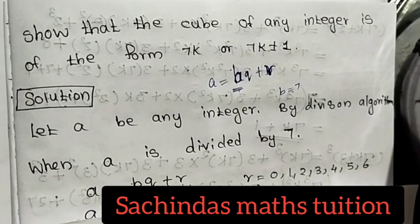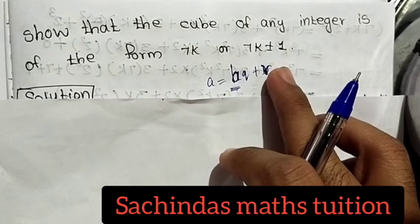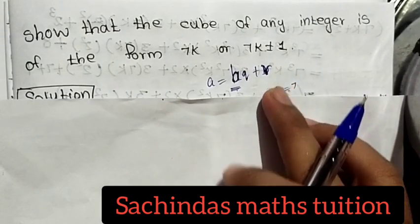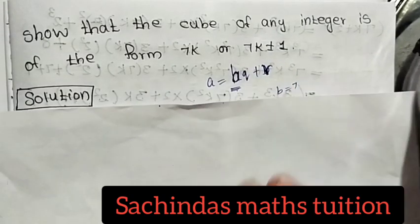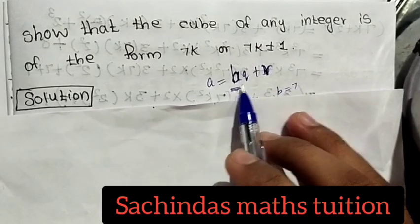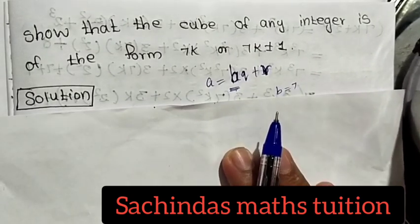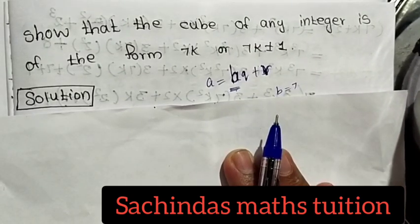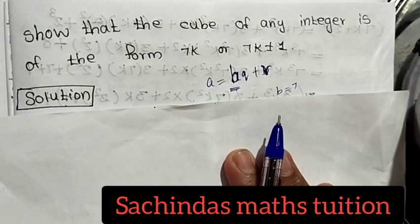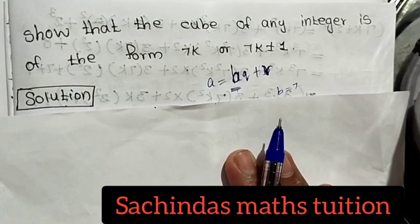We need to prove that the cube of any integer is of the form 7x, or 7x plus or minus 1. That is how we solve this. We use the division algorithm: a is equal to bq plus r. We have studied this division algorithm.